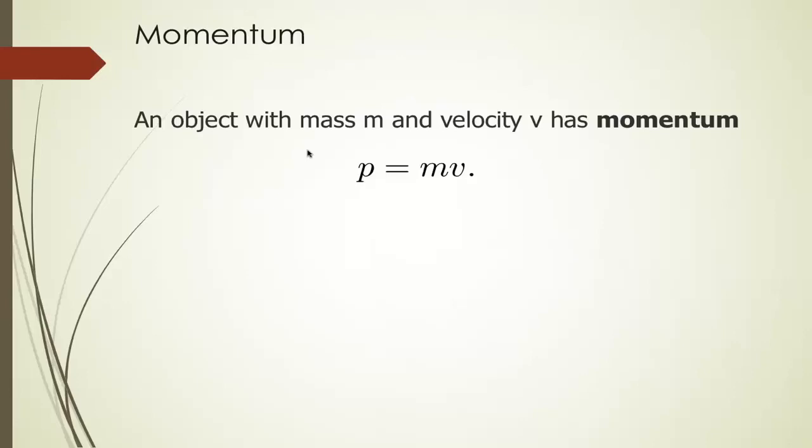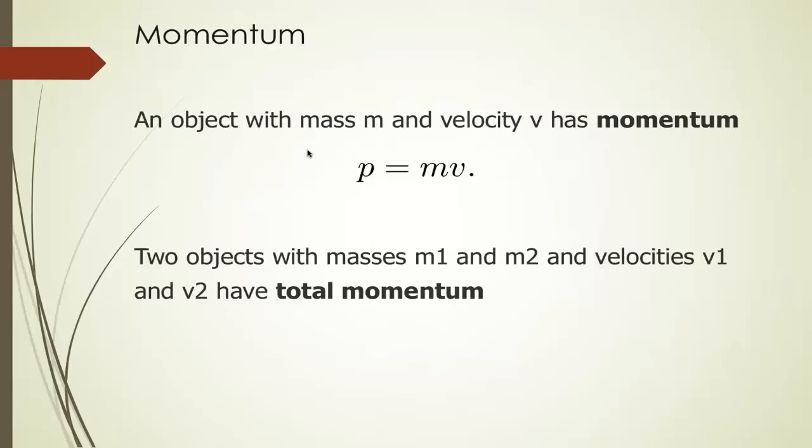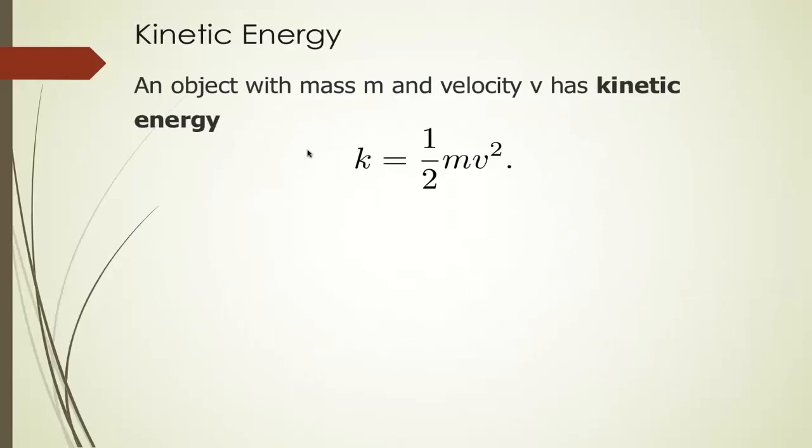Here's a little bit of a physics background. An object with mass m and velocity v has momentum equal to the product of m and v. An object has large momentum if it is heavy (big mass), or going fast (big velocity), or both. Two objects with masses m1 and m2 and velocities v1 and v2 have total momentum equal to the sum of their individual momenta — in other words, m1 times v1 plus m2 times v2.